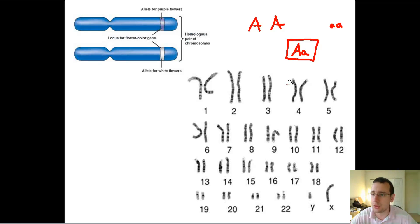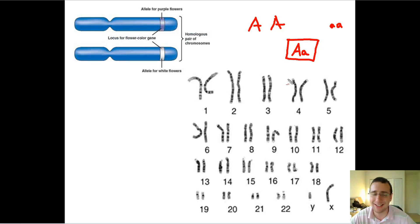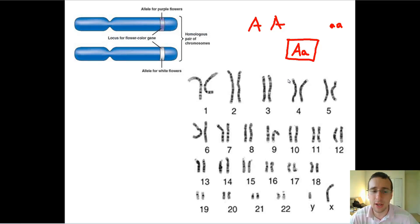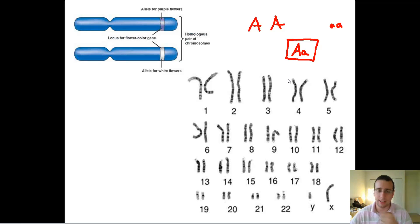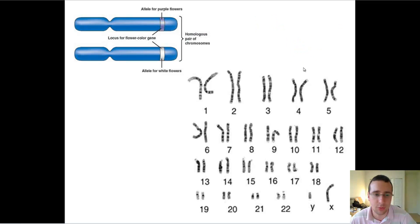Diploidy is going to preserve alleles even if they weren't advantageous, because you could never fully eliminate the little 'a' allele — the big A little a heterozygote preserves the little 'a' in the population, since you can't select against a heterozygous individual if the recessive phenotype is masked. But going further, the heterozygote is sometimes actually advantageous, and that advantage leads to balanced polymorphism.